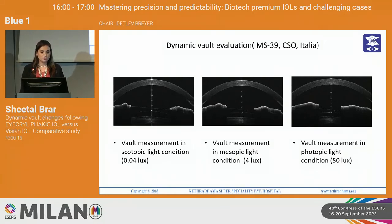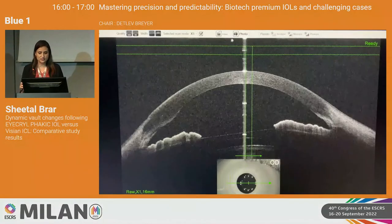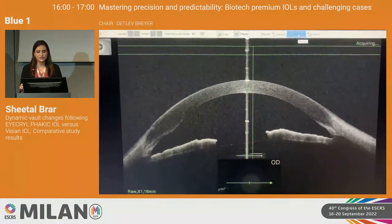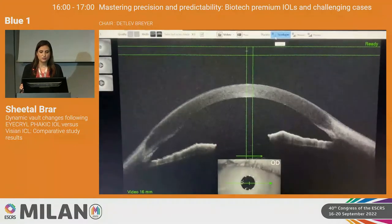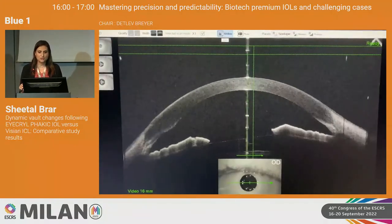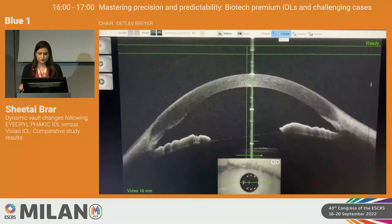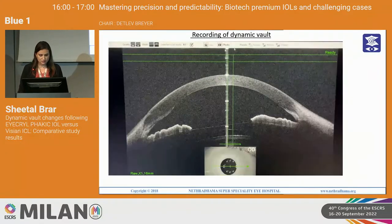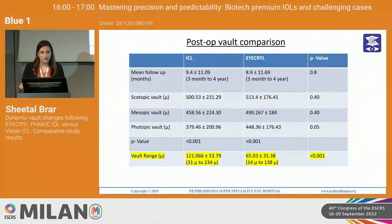Preoperatively, except for mean keratometry, all other parameters were perfectly matched with no significant difference between the two groups. The dynamic vault was evaluated using the MS39 in three different light conditions: scotopic at 0.04 lux intensity, mesopic at 4 lux intensity, and photopic at 60 lux intensity. This is a short video of how we recorded the vault in different light conditions — the MS39 provides the option of capturing the vault as a photo or video in scotopic, mesopic, and photopic conditions. You can see as the pupil constricts, the vault also changes.